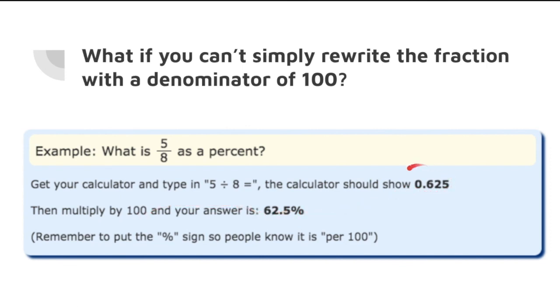Because percent means for every 100. That's why our decimal answer here, the decimal number, may be converted into percent by simply multiplying it by 100. So remember to put the percent sign so that you will know that it is per 100.